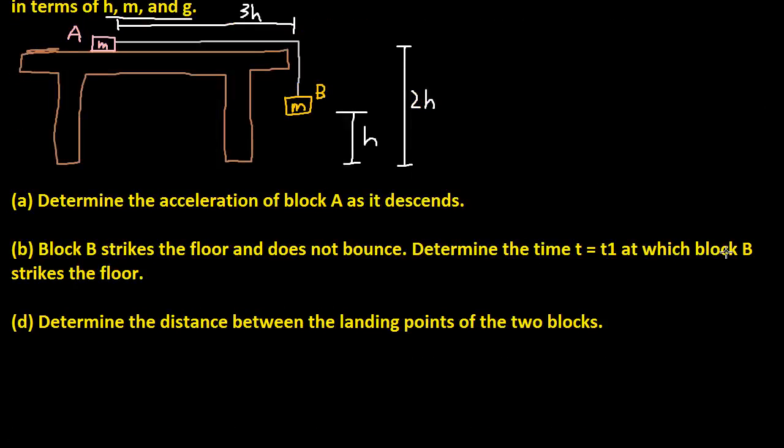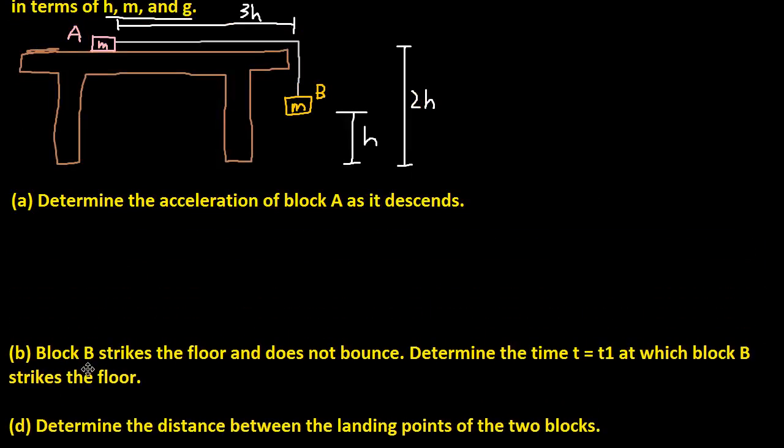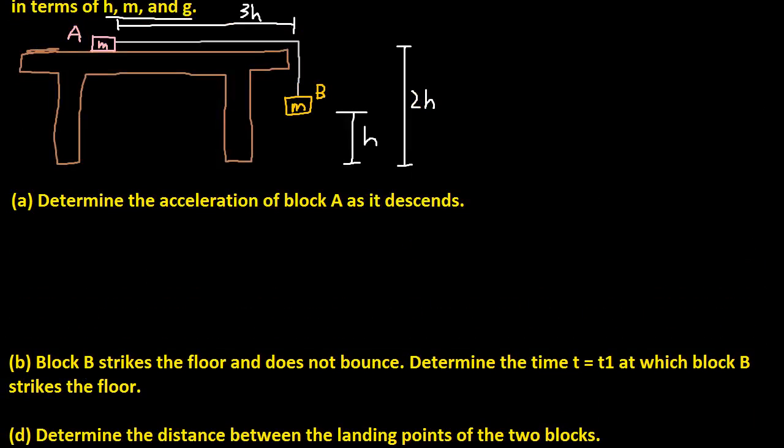Let's see how we do part A. It says determine the acceleration of block A as it descends. One thing to notice here is that these two blocks have the same mass, so that simplifies things a lot. Let's draw a little free body diagram for block B.